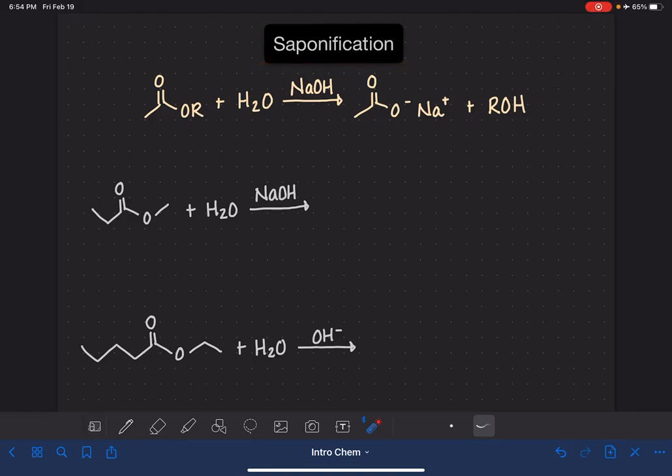Saponification is the reaction between an ester and water in the presence of a strong base like sodium hydroxide. As the name might imply, the products of this reaction include soap, which is this molecule right here, and it also generates an alcohol product.